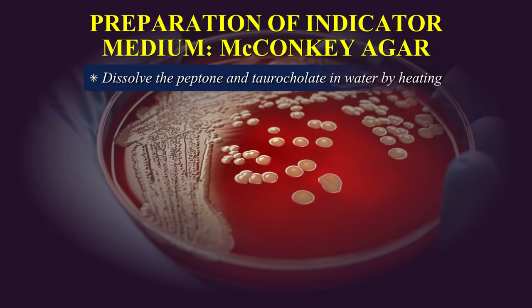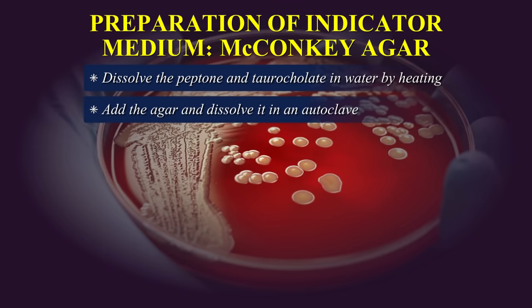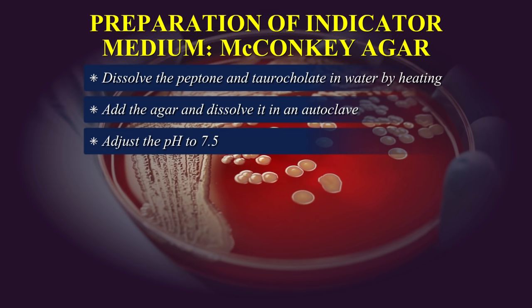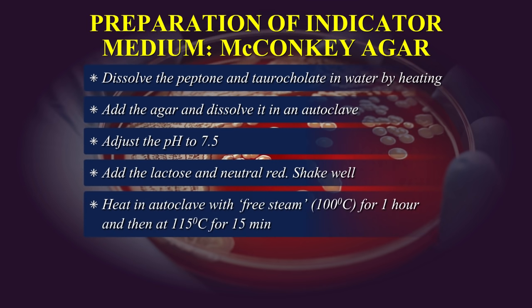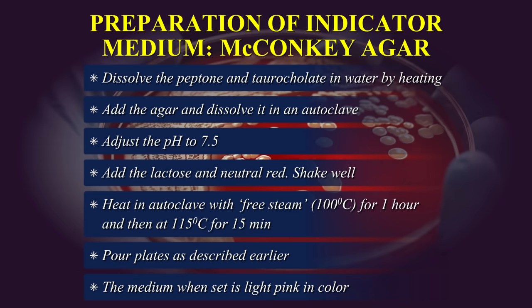Dissolve the peptone and taurocholate in water by heating. Add the agar and dissolve it in an autoclave. Adjust the pH to 7.5. Add the lactose and neutral red and shake well. Heat in autoclave with free steam at 100°C for 1 hour and then at 115°C for 15 minutes. Pour plates as described earlier. The medium when set is light pink in colour.